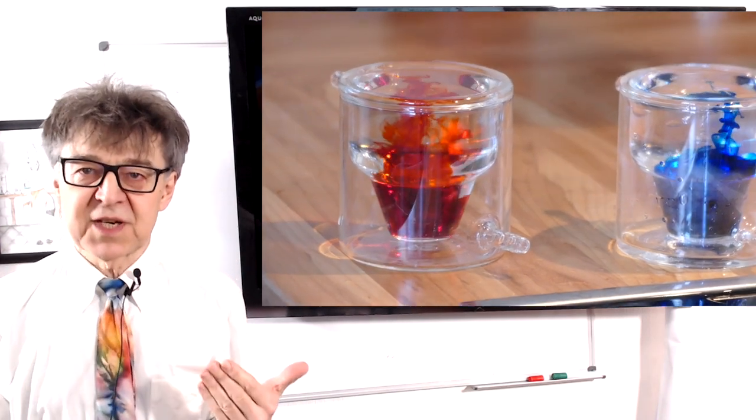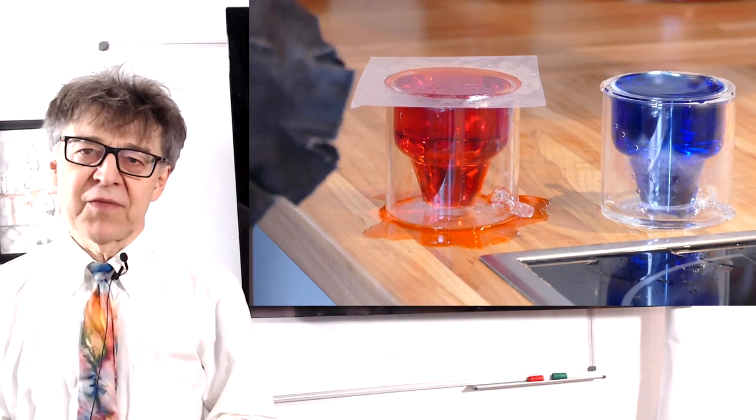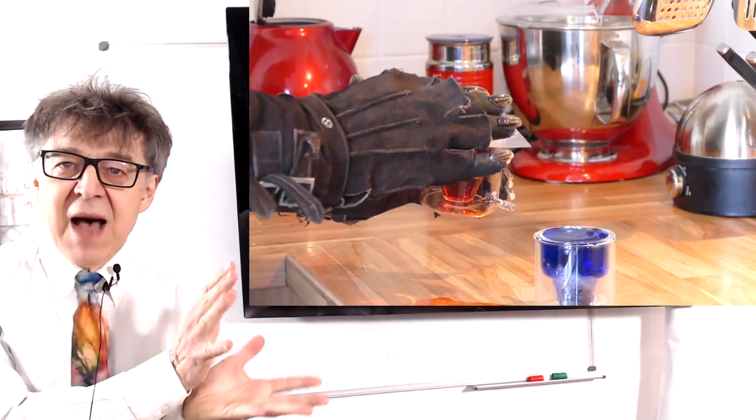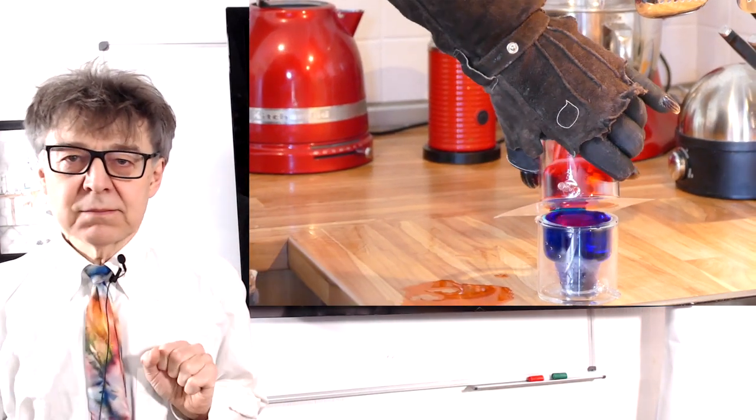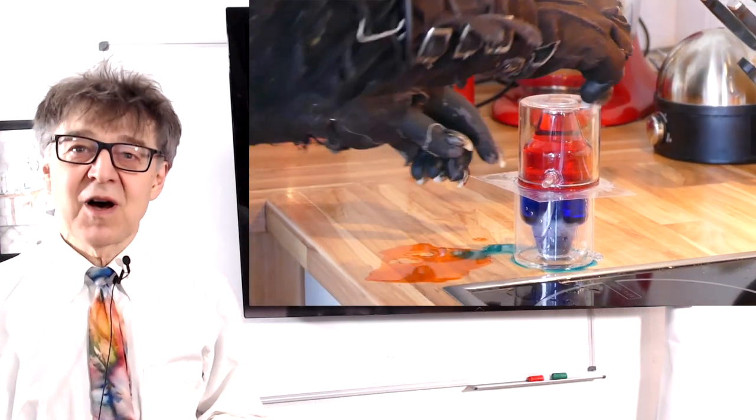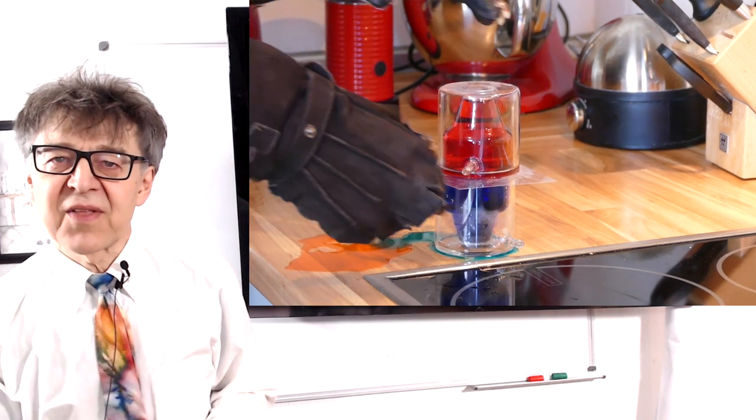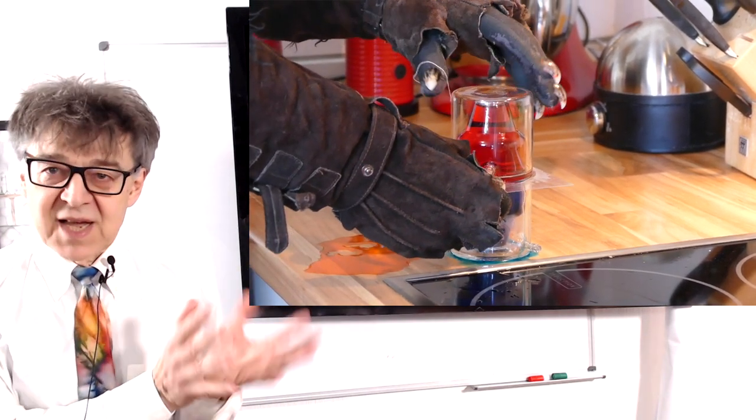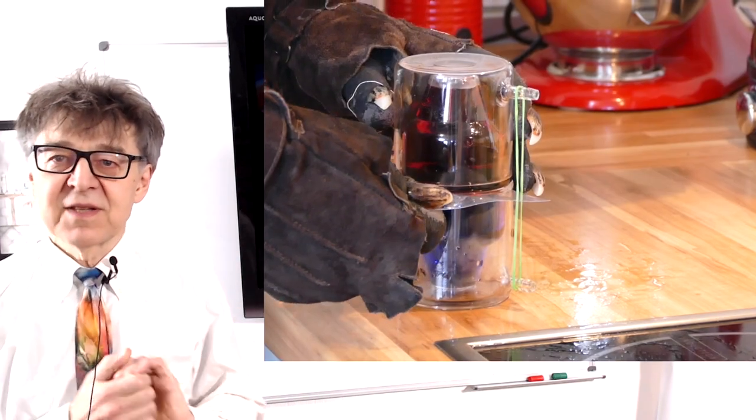And now for a pretty difficult experiment. Grey puts the foil on top of the glass with the hot water and turns the glass upside down. Note that the water does not spill. This is science too, a consequence of the air pressure. Maybe we will talk about that another time. Grey now puts the hot water in the upside down glass on top of the cold water and pulls out the separating foil.